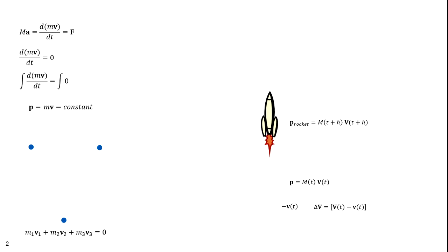At time t plus h, the momentum is m(t+h) times V(t+h). In order to create that thrust, the rocket had to expel mass. The change in mass, delta m, is the mass at time t minus the mass at time t+h. The momentum of the exhaust is delta m times delta v, which equals [m(t+h) − m(t)] times [V(t) − v(t)]. The law of conservation of momentum dictates that the momentum of the new system must equal the momentum of the old.